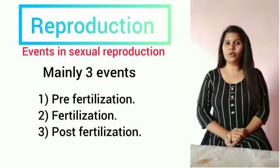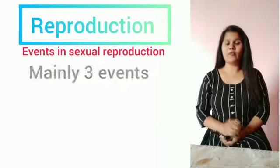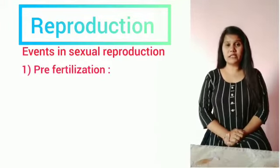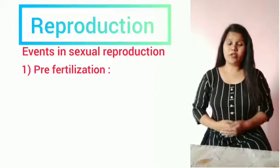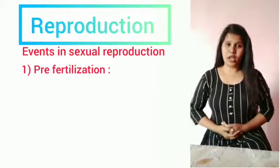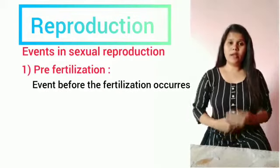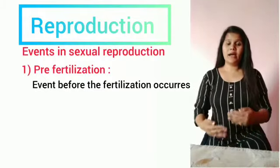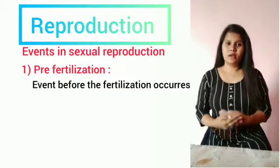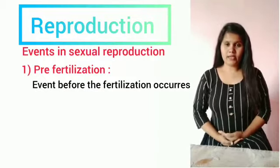Now we will go through the pre-fertilization. The word pre-fertilization itself suggests that these are whatever events occur before fertilization. So all the events before fertilization occurring in sexually reproducing organisms is called pre-fertilization. In this stage, there are mainly two events: gametogenesis and gamete transfer.